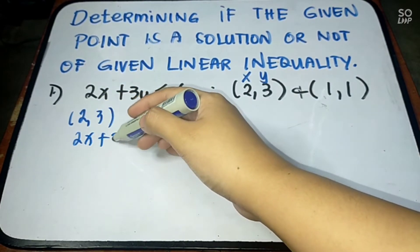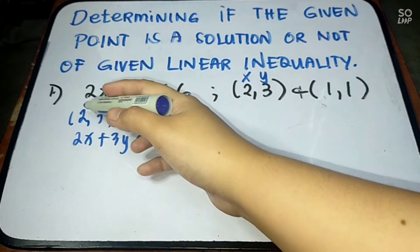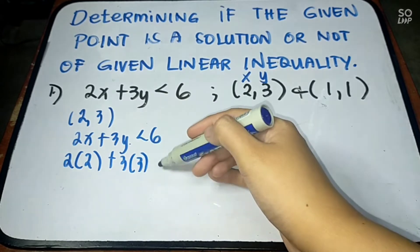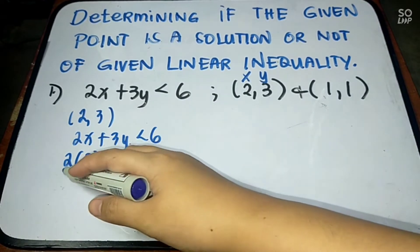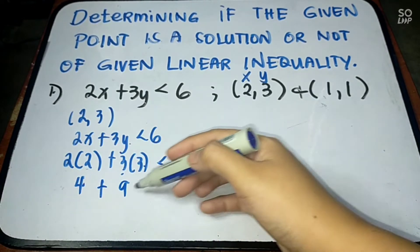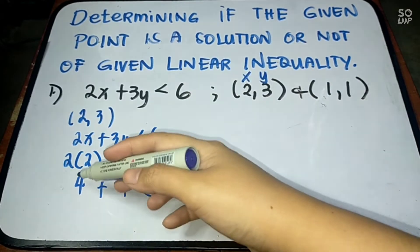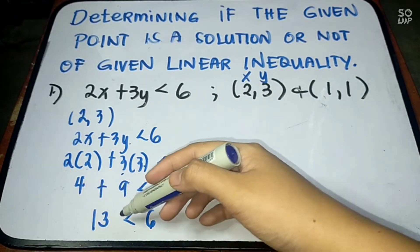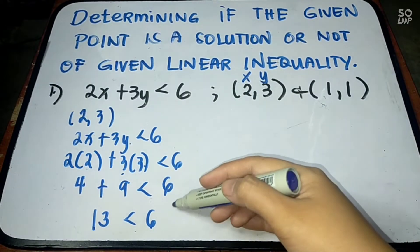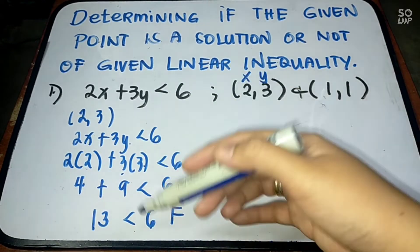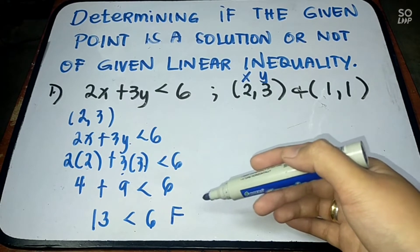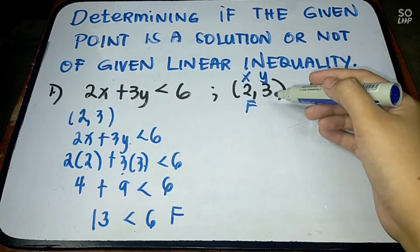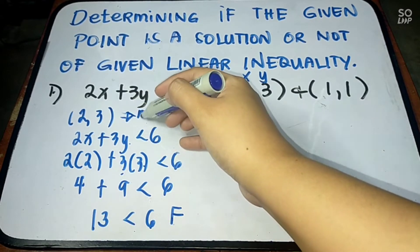We are going to use 2x plus 3y less than 6. Change x into 2 and y into 3. So, 2 times 2 plus 3 times 3 is less than 6. Then simplify: 4 plus 9 less than 6. The answer is 13 less than 6. Is 13 less than 6? That is false — 13 cannot be less than 6 because 13 is greater than 6. Therefore, (2, 3) is not a solution.